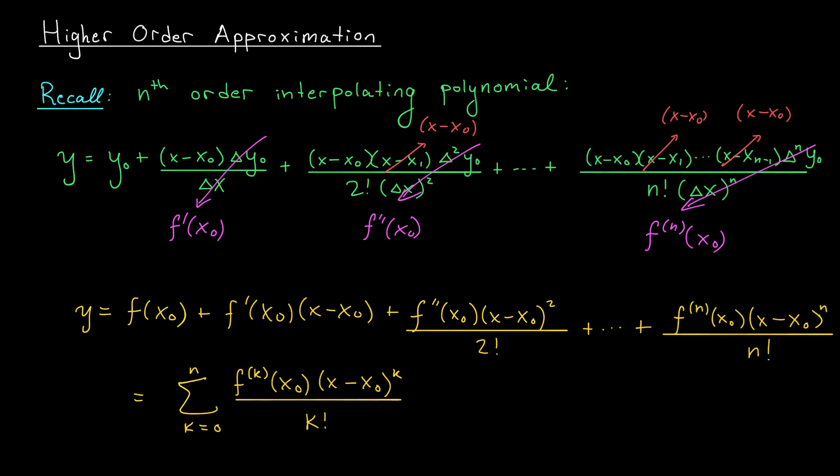Say it once when you wake up in the morning and once when you go to bed at night. It's so special that we even give it its own notation. We write this as Pₙ,ₓ₀(x). This tells me that my polynomial is of degree n, and I've centered it around the point x_0.